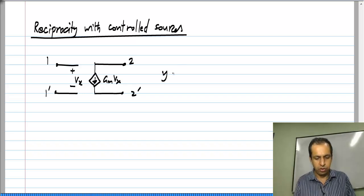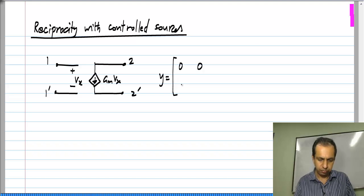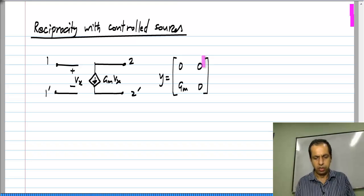I know that first of all the correct parameter set for describing this is the Y parameter set, and the Y parameters are these. Clearly, it is non-reciprocal. So a controlled source by itself is non-reciprocal.